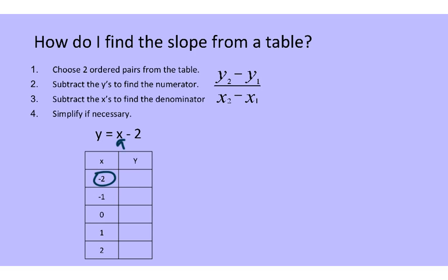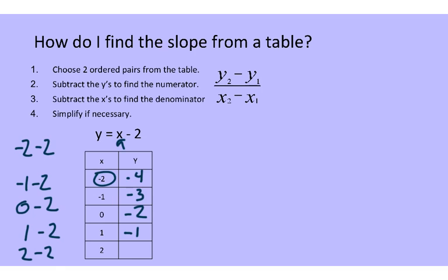The first one would be negative 2 minus 2, which is negative 4. Then negative 1 minus 2 is negative 3. We're going to put 0 in: 0 minus 2 is negative 2. Then 1 minus 2 is negative 1. And 2 minus 2 is 0.